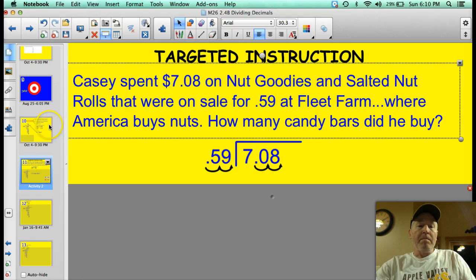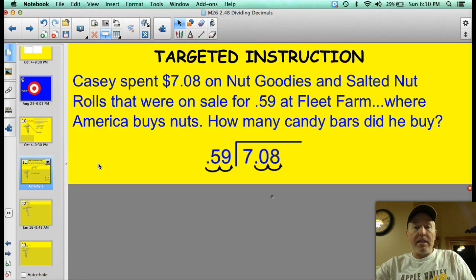Alright, our word problem tonight. My son Casey spent $7.08 on nut goodies and salted nut rolls that were on sale for 59 cents at Fleet Farm. That's where America buys nuts. How many candy bars did he buy? Well, you can set that problem up. Here's the $7.08, his dividend, divided by .59, or 59 cents.